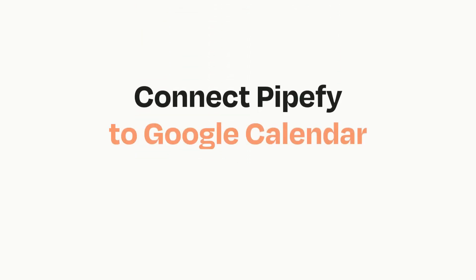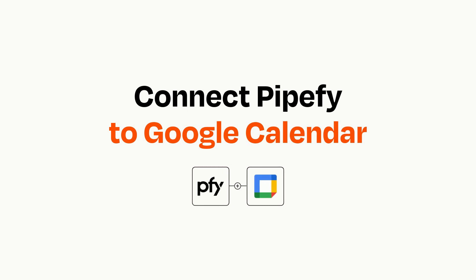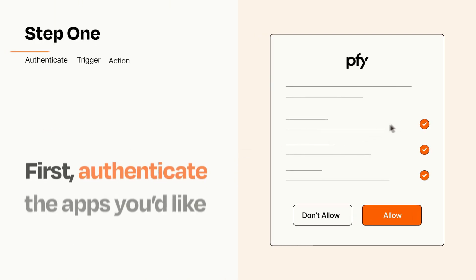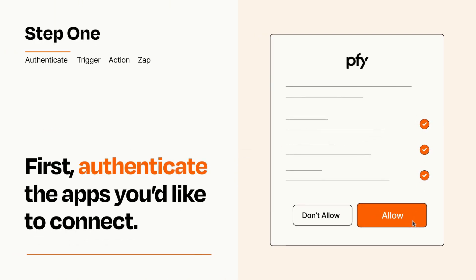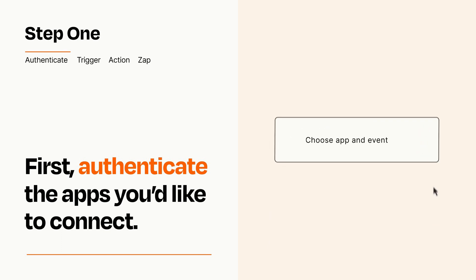Connecting these apps has never been easier because you can do it with Zapier, which helps every person and every business create automated workflows. It's easy. To get started, you'll just need to authenticate your apps, which takes just a few seconds. Zapier meets industry standards for encryption when connecting with each of your apps.